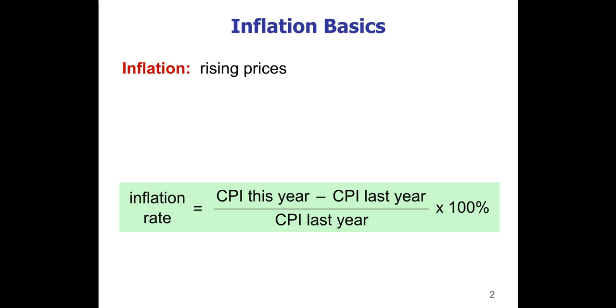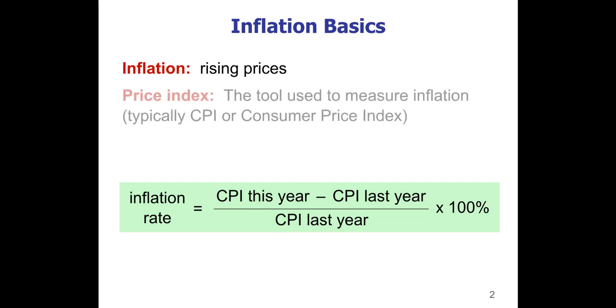Now, in order to measure this, the government puts together a price index. And there are various different types of price indexes, but the main way that the government calculates inflation is through something called the Consumer Price Index or CPI. So that's what we're going to be learning in the next video.